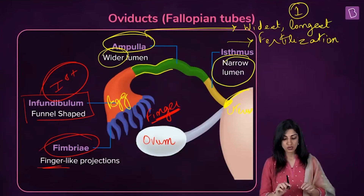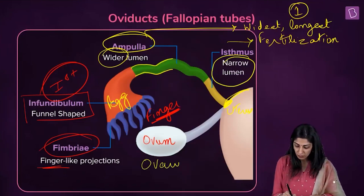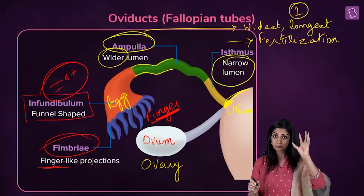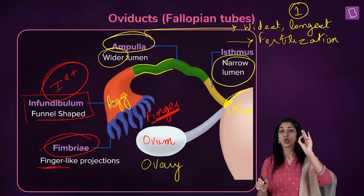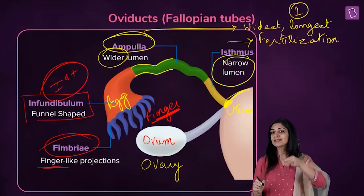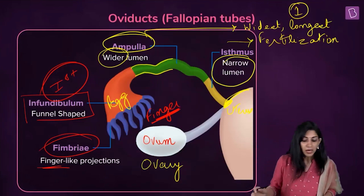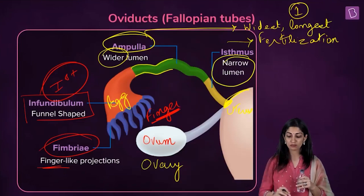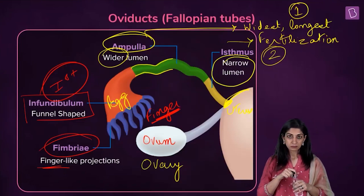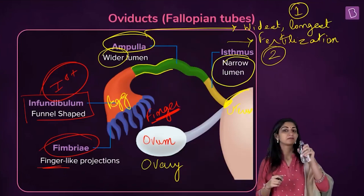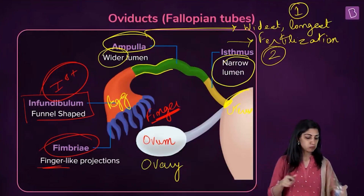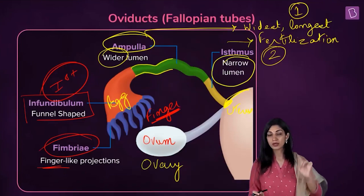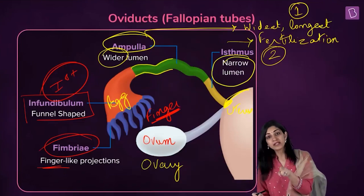Now pick up your pens. We have the ovary, which produces the ovum. The first part of the fallopian tube is the infundibulum, with fimbriae. The second part is the ampulla — write it down — it is the widest and longest portion, and it is the site of fertilization. The third portion is the isthmus, which opens into the uterus.